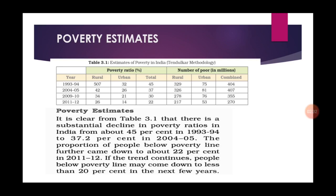Social scientists pointed out different indicators that are usually used to relate to levels of income and consumption. But now poverty is also looked through other social indicators like illiteracy level, lack of general resistance due to malnutrition, lack of access to healthcare, lack of job opportunities, lack of access to safe drinking water and sanitation. Analysis of poverty based on social exclusion and vulnerability is now becoming very common.